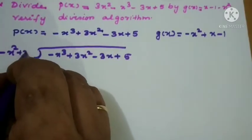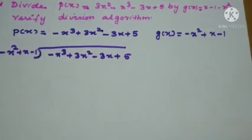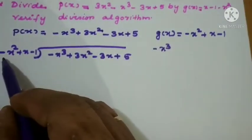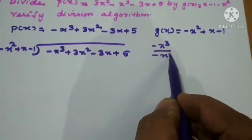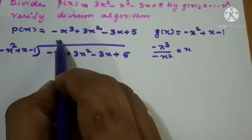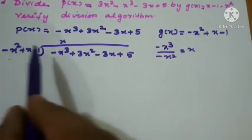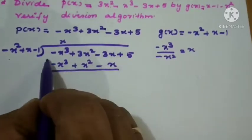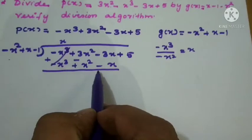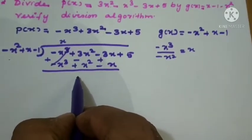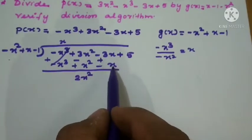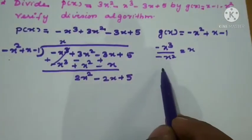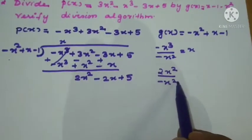The dividend is minus x cubed plus 3x squared minus 3x plus 5, and the divisor is minus x squared plus x minus 1. The first term of the dividend, minus x cubed, is divided by the first term of the divisor, minus x squared, which equals x. So x is the first term of the quotient. Multiply x by each term: x times minus x squared gives minus x cubed, x times x gives plus x squared, and x times minus 1 gives minus x.